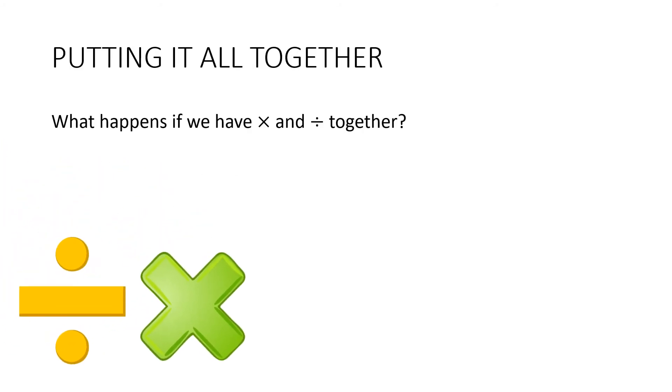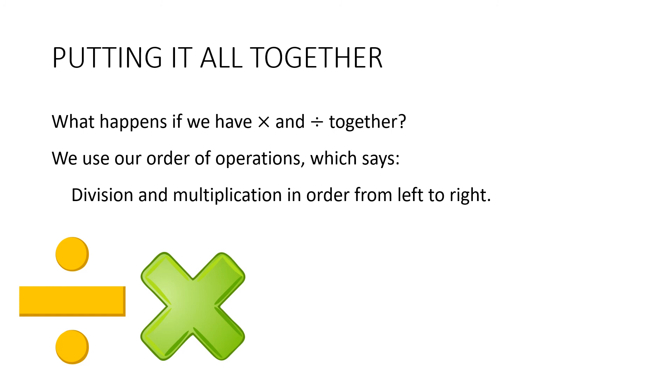So let's put it all together. What happens if we've got times and divide together in a question? Well, we're just going to follow our order of operations, which says that we do division and multiplication in order from left to right. So let's simplify 3x times 2x divide 6. So we'll do the first bit. 3x times 2x is 6x squared. And I've already turned it over into fraction notation. What cancels? The sixes. Answer x squared.